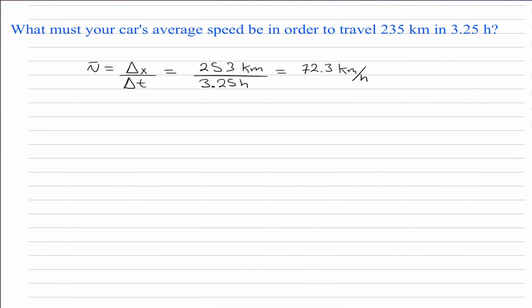So the average speed that your car should be traveling at in order to travel 235 kilometers in 3.25 hours is 72.3 kilometers per hour. So that's it for today's problems. So I'll see you in the next one. Bye.